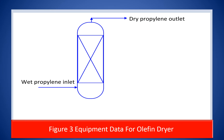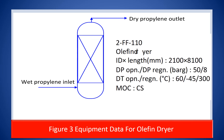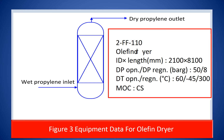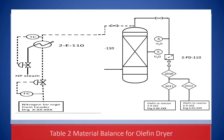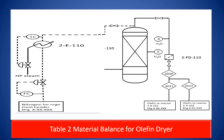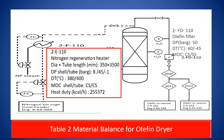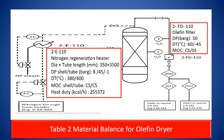The equipment data is provided in the PFD in figure 1 we discussed earlier. For better visibility, I present the equipment data separately for the olefin dryer in this figure. The data includes the inner diameter and length, pressure and temperature during operation and regeneration, and material of construction. Likewise, this figure provides the equipment data for the after filter and the regenerating heater. This data will be used for developing the detailed design.